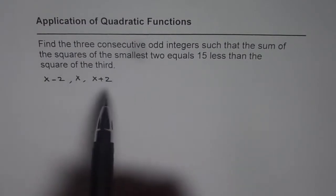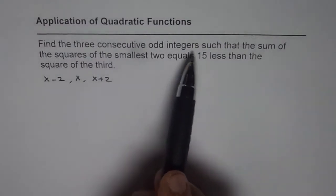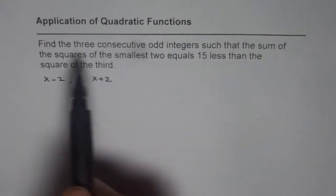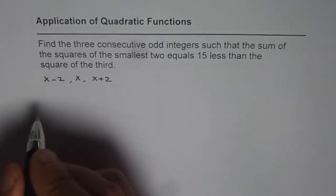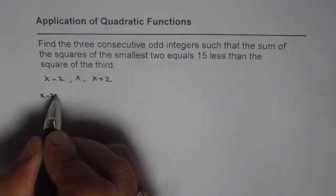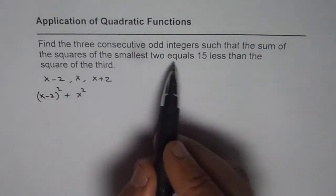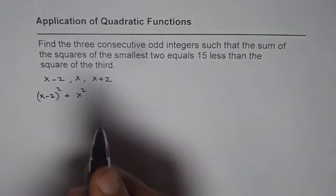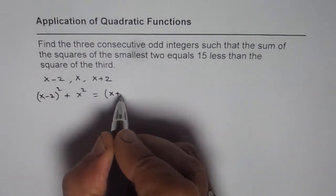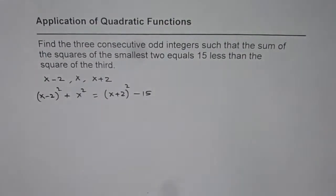Now, let us write down the equation. The sum of squares of the smallest two, that means (x-2)² + x², equals 15 less than the square of the third, which is (x+2)² - 15. That is how you can get your equation.